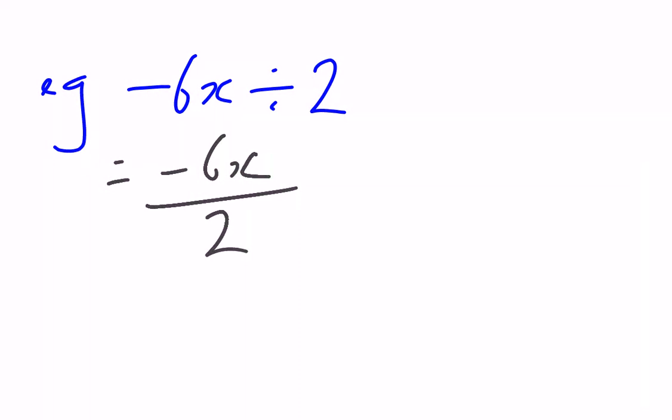That is, we find the highest value, the highest number, or the highest term, that can go evenly into the top and the bottom. That is, finding the highest common factor. The highest common factor of negative 6x and 2 is just 2. So we're going to cancel out the common factor of 2, that is, divide the top and the bottom by 2.